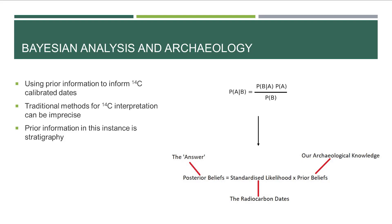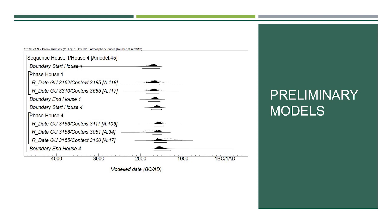So one strand of this project is basically to provide a check on those legacy dates — essentially to check whether dates from Lairg and similar sites are things we can trust. Bayesian analysis uses prior archaeological information to inform our radiocarbon date distributions. In this instance I'm primarily looking at stratigraphy, though other prior information can be used. What I did was take a selection of published dates from the monograph, identify contexts with secure taphonomy, and make some preliminary models.